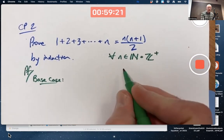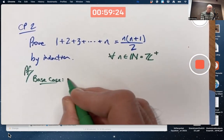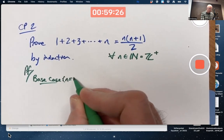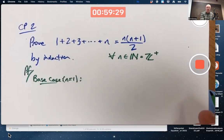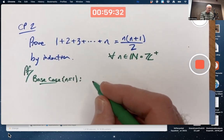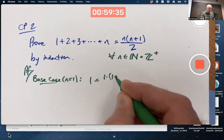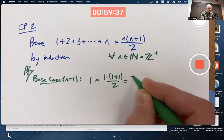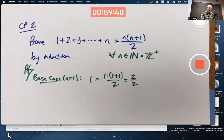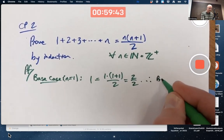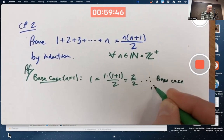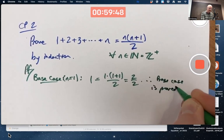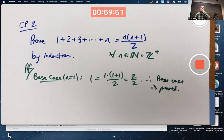The base case then means start with n equal to 1. Is this equality true when n equals 1? Yes, because it's trivial. One does in fact equal one times one plus one over two, because that's two over two. Therefore, the base case is proved. The base case almost always is pretty easy. There are a few examples here and there where it's not easy to prove, but most examples you encounter, it is easy.